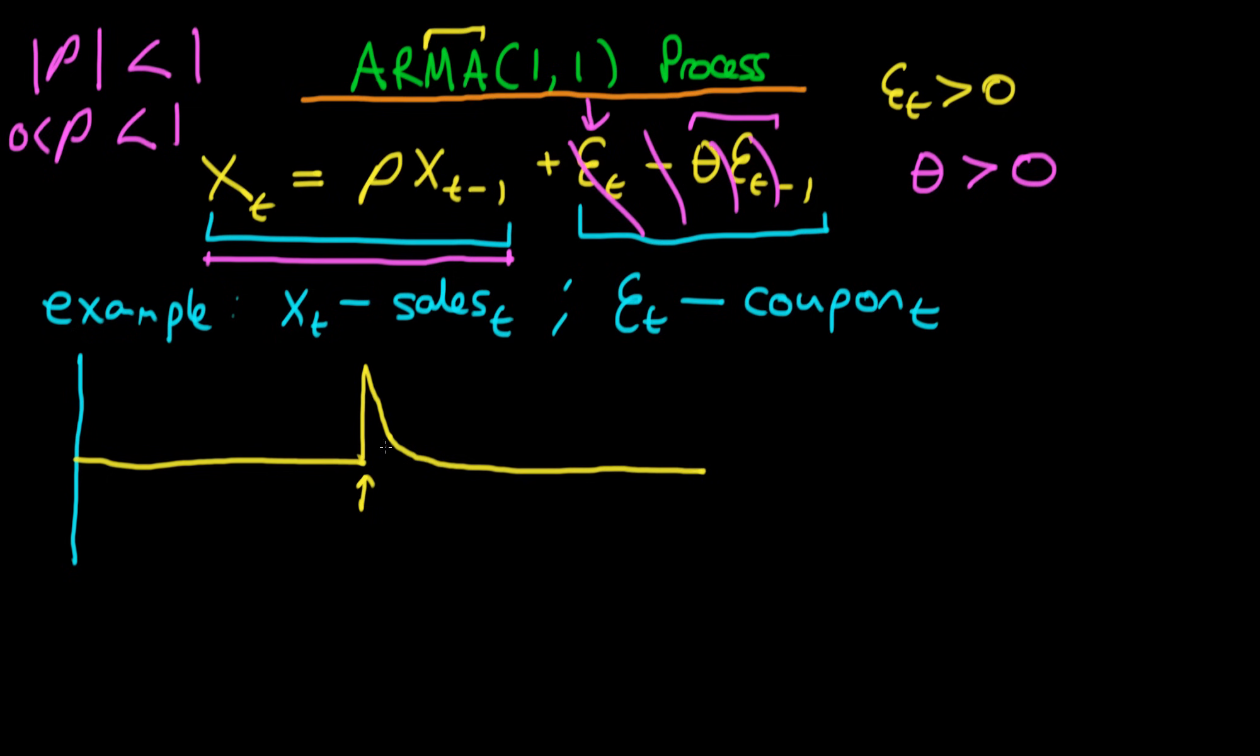So just to recap here, what we've had is an initial effect of the MA process, which is to cause sales to go up in the first period, which is this sort of spike here. Then in the next period, they've caused sales to decline very fast to this particular level here. And in the next period or subsequent periods after that, sales have declined along an AR1 process.